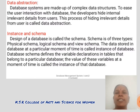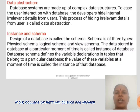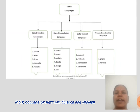Instance and Schema. Design of a database is called the data schema. Schema is of three types: physical schema, logical schema, and view schema. The data stored in the database at a particular moment of time is called an instance of the database. Database schema defines the variable declarations in tables that belong to a particular database. The value of these variables at a moment of time is called an instance of the database.